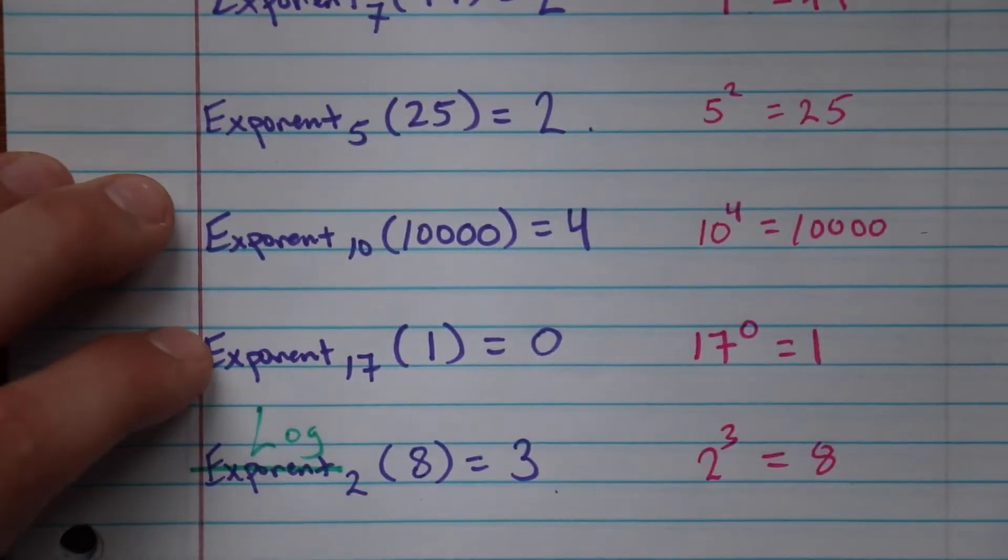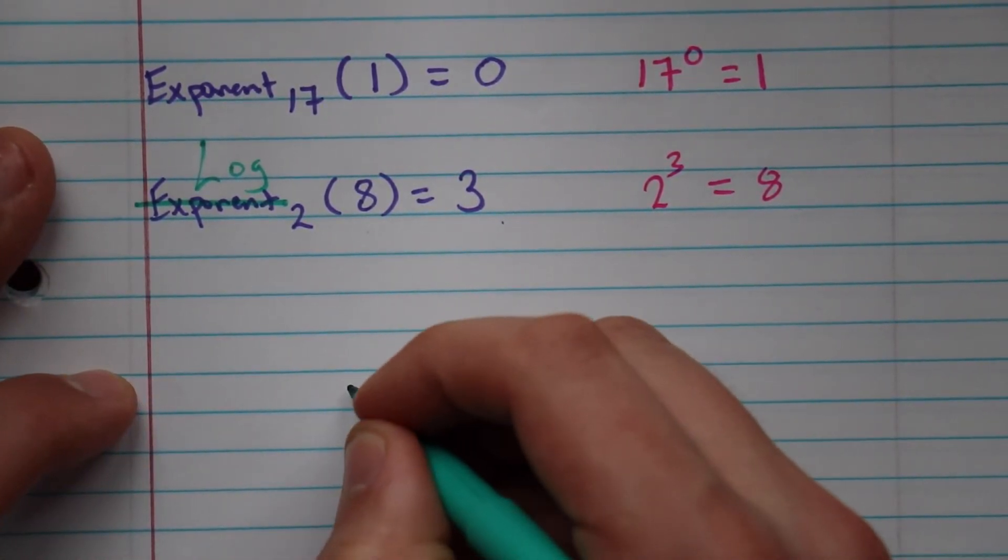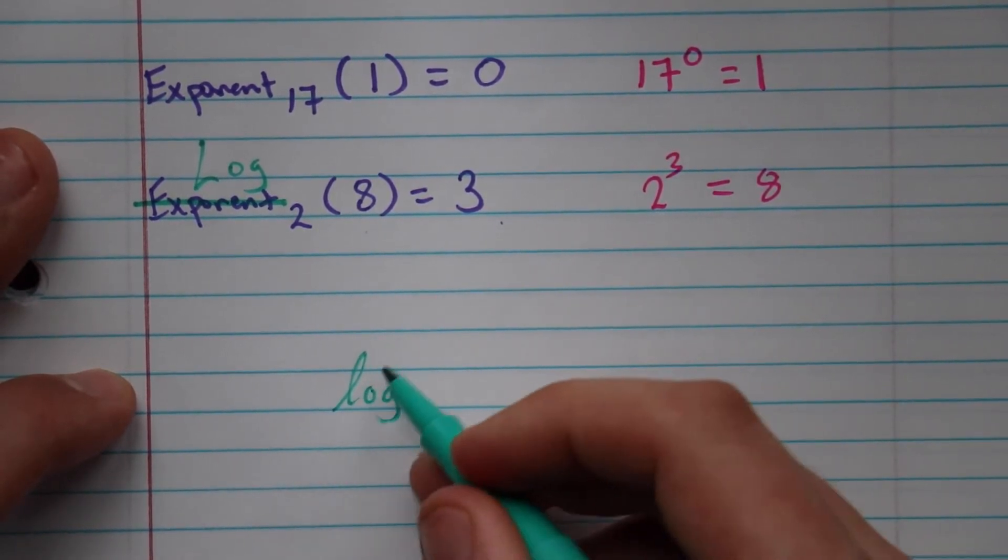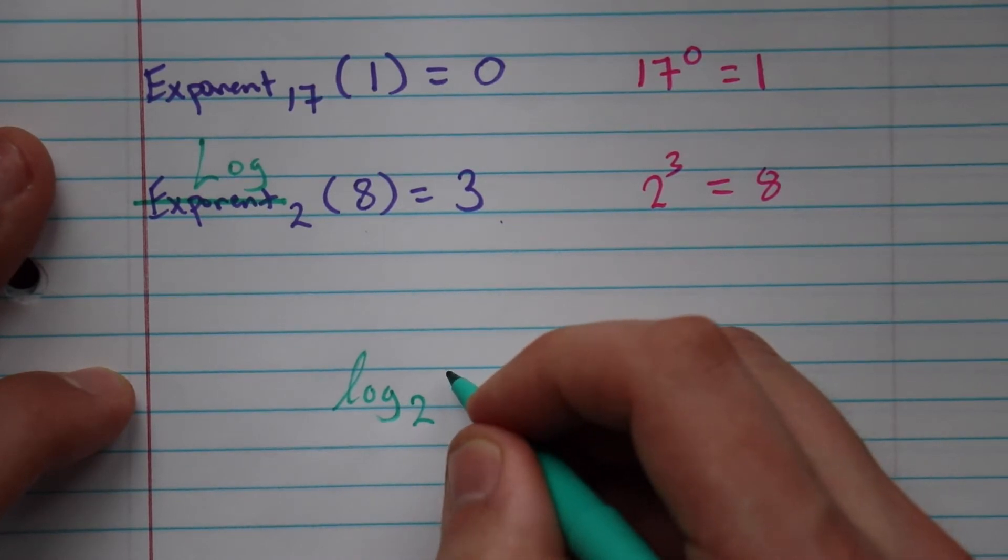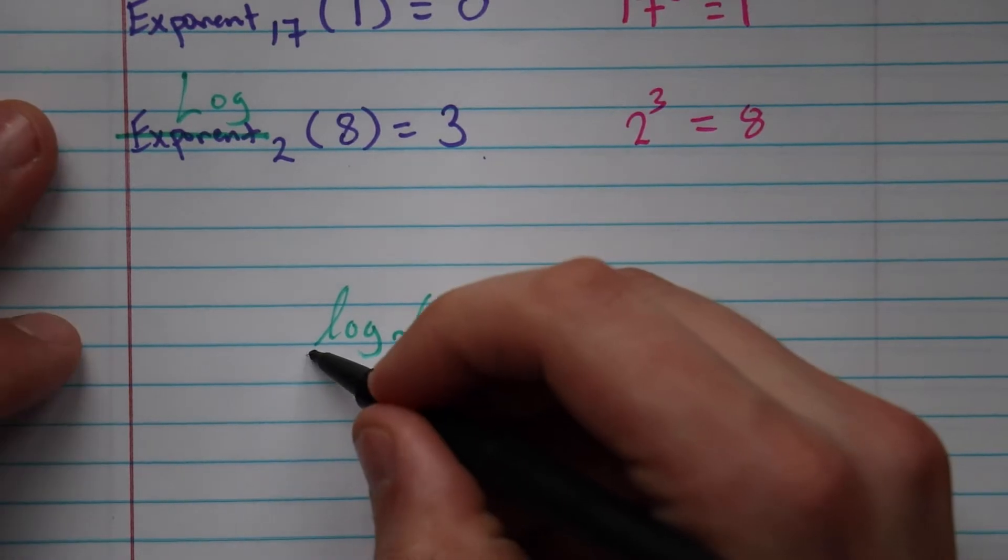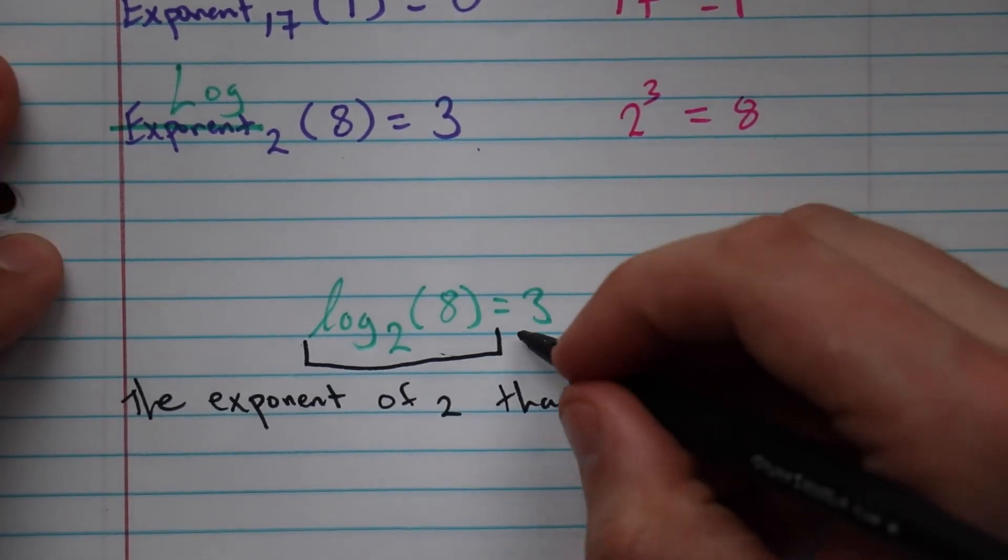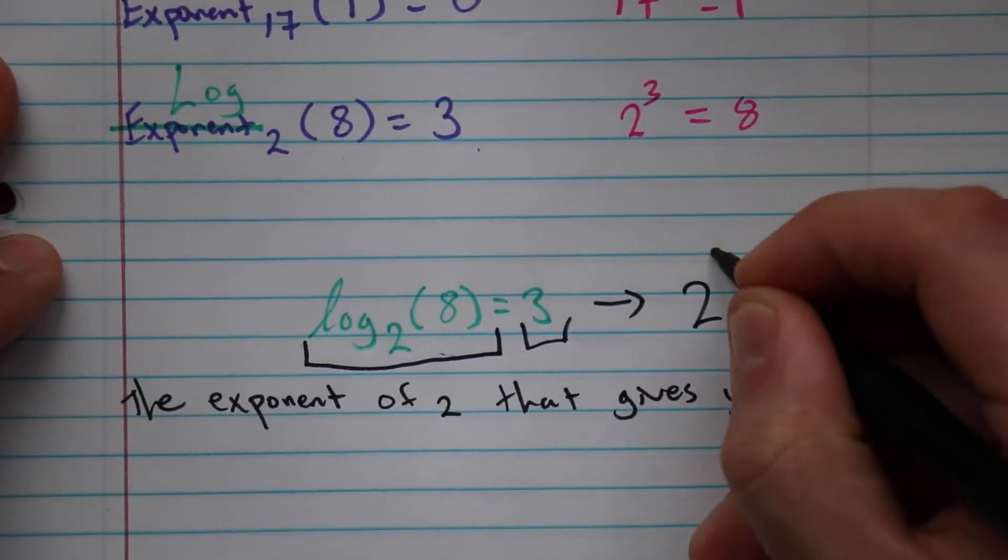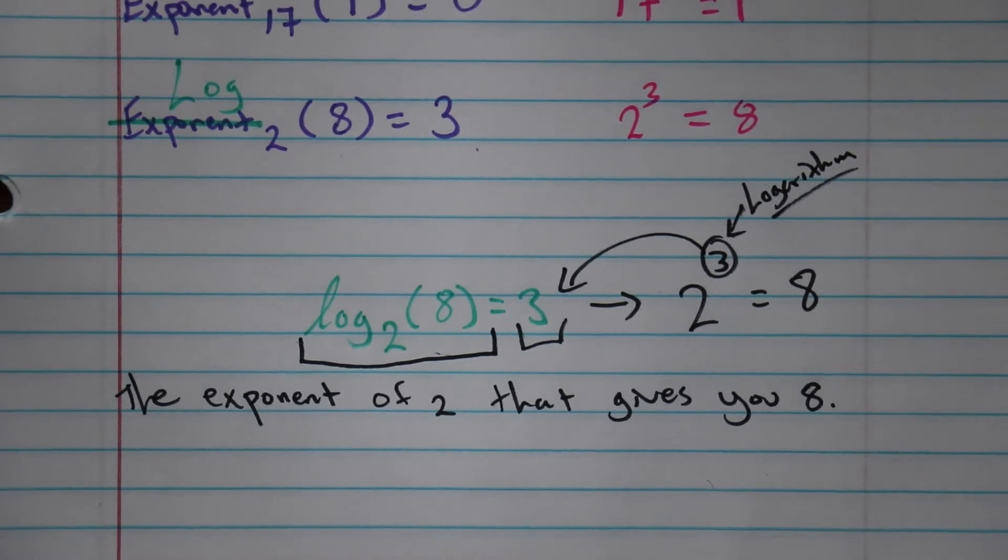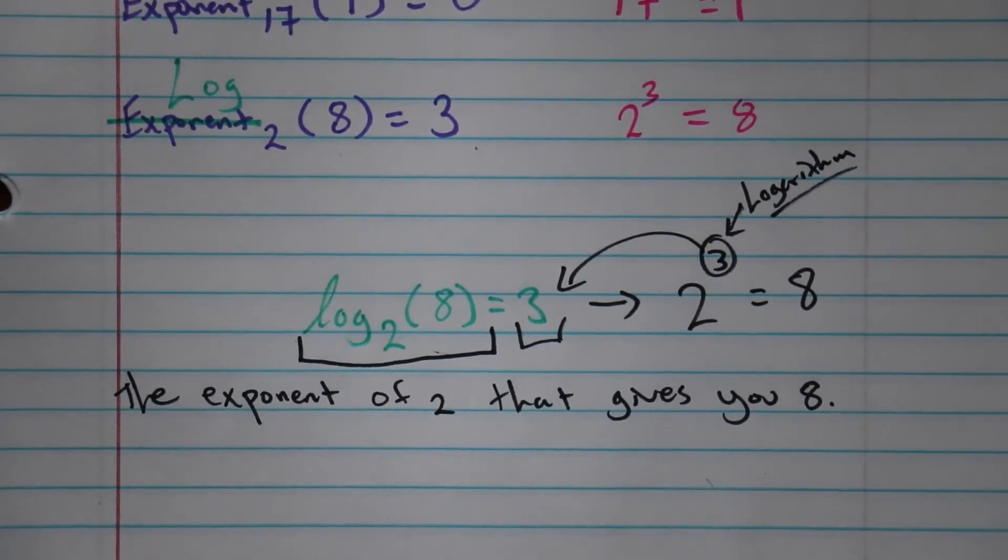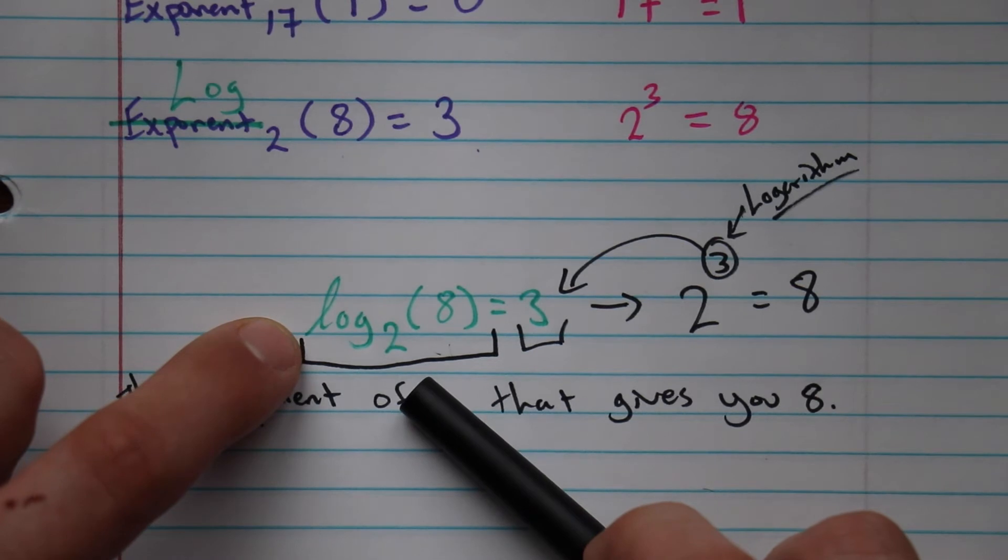So what does that mean? It means that a long time ago, mathematicians wanted to make themselves sound a lot fancier, and so we use the name logarithm instead of exponent. Obviously, exponent, if you had to write that all the time, it would be kind of gross and disgusting. A logarithm, it's the same exact idea. It's the same concept, nothing's different.